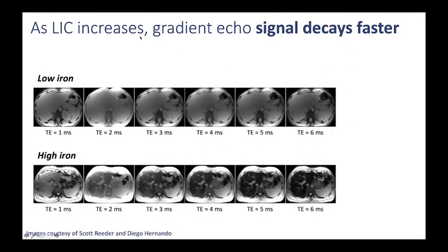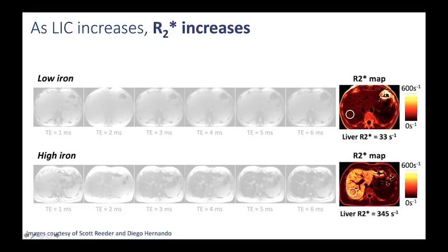As the LIC increases, the gradient echo signal decays faster. Here is a patient with low iron in the liver, and here is a patient with high iron in the liver. You can see that the liver loses signal more slowly in the patient with low iron than in the patient with high iron. We can calculate the signal decay rate as the R2*, and notice that as the LIC increases, the R2* increases. The patient with low iron has an R2* of 33 inverse seconds, and the patient with high iron has an R2* of 345 inverse seconds. On these R2* maps, the liver looks brighter with higher R2*, corresponding to the color lookup table shown here.